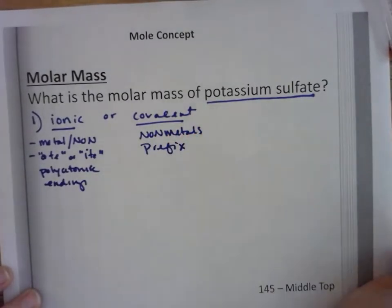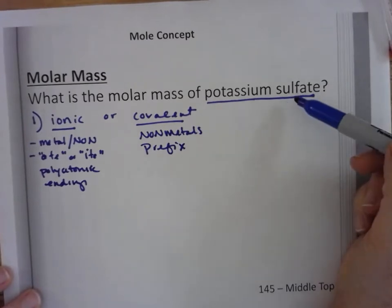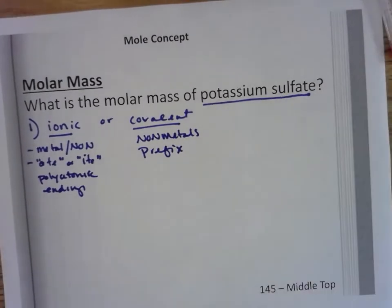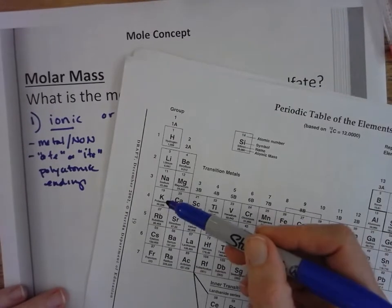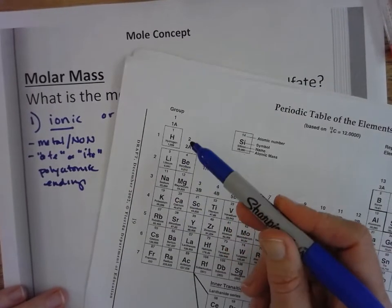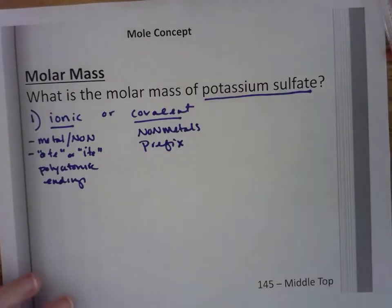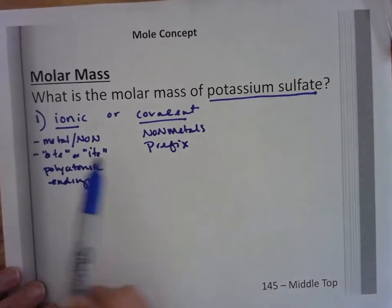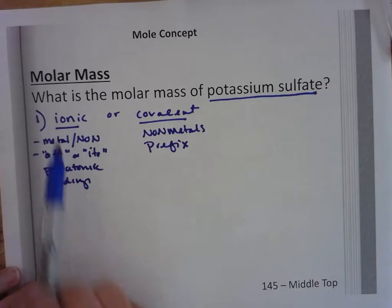If we look at potassium sulfate, potassium is right here. It is in group one — it's an alkali metal, therefore it's a metal. There are no metals in covalent, so it's got to be ionic.